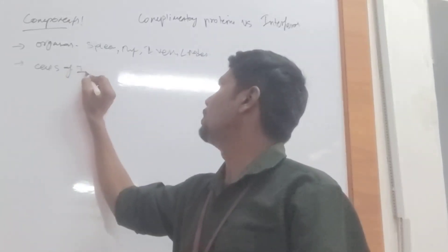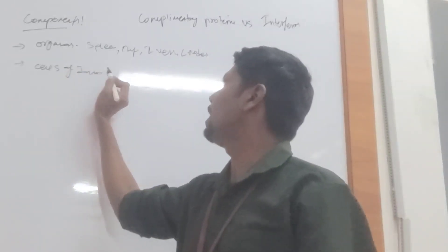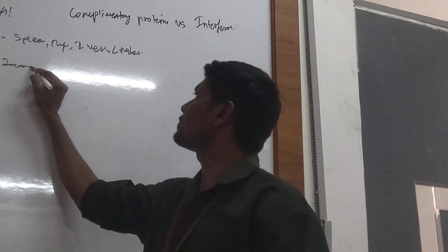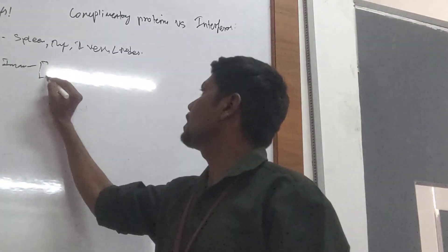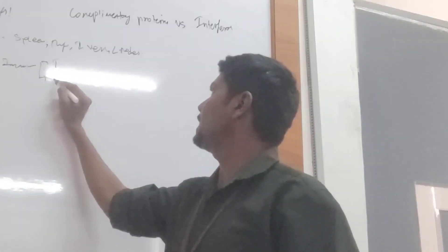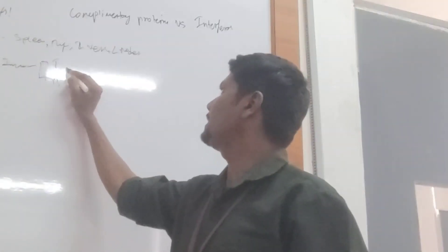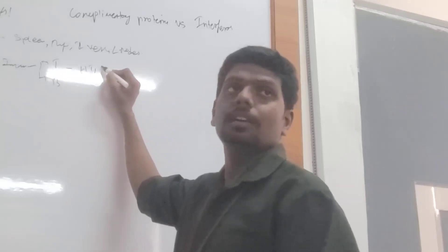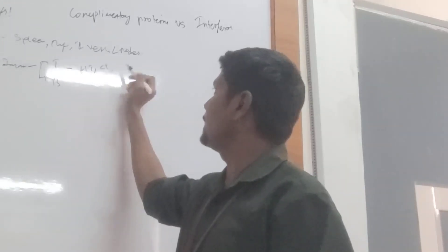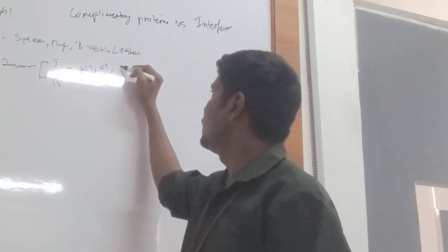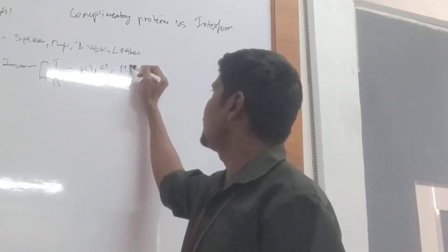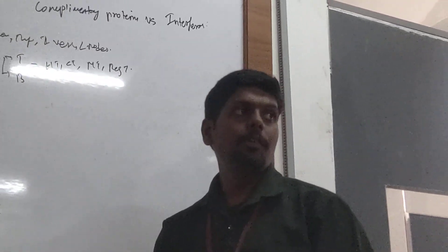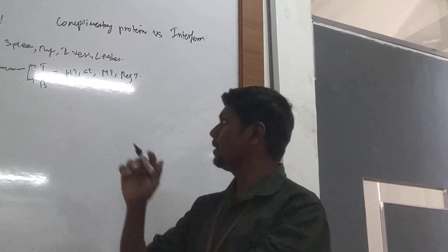Then coming to the cells of the immune system. Now what cells are present? We have T cells and B cells. T cells include lymphatic cells, cytotoxic T cells, memory T cells, regulatory T cells.